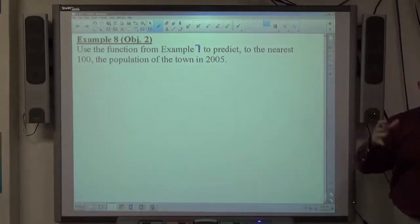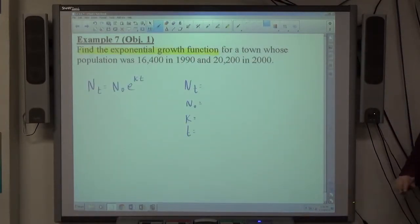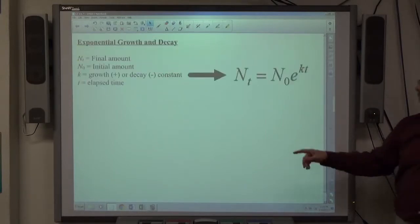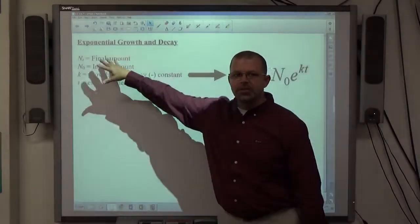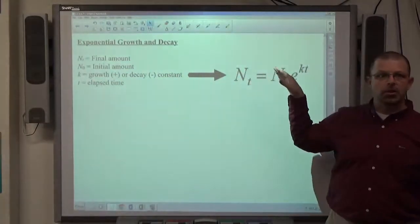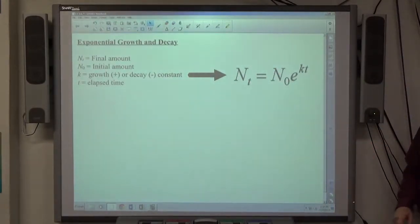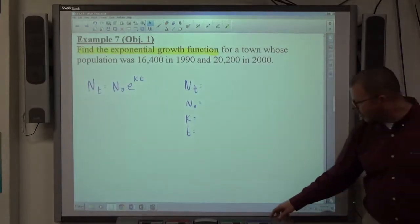I'm going to do 7 and 8 together because they go with each other. Basically what I need to do with this formula is I need to establish those things. Now, the formula bank you get on your test, if you've looked at it already, you'll notice that it doesn't tell you what all these things represent. I just give you the formula. So it's up to you to know what all that stuff is for each formula.